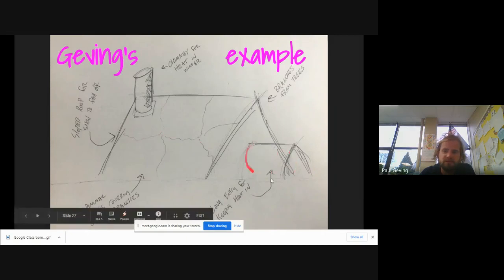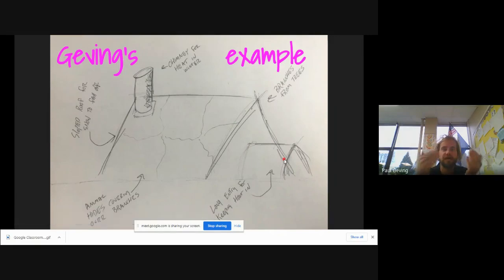Here's some branches to help hold up animal hides covering those branches. And then I made a long entryway because I know that one of the problems is when heat leaves your house.